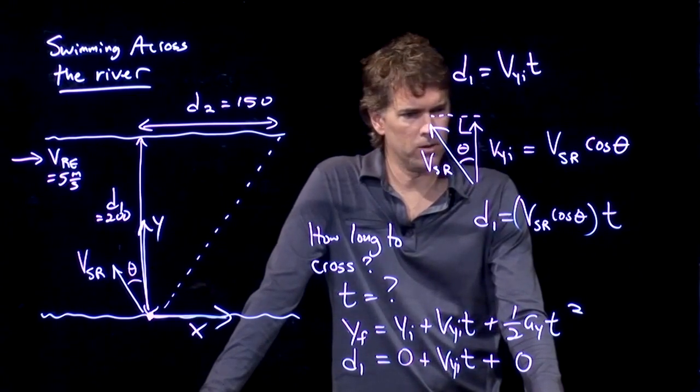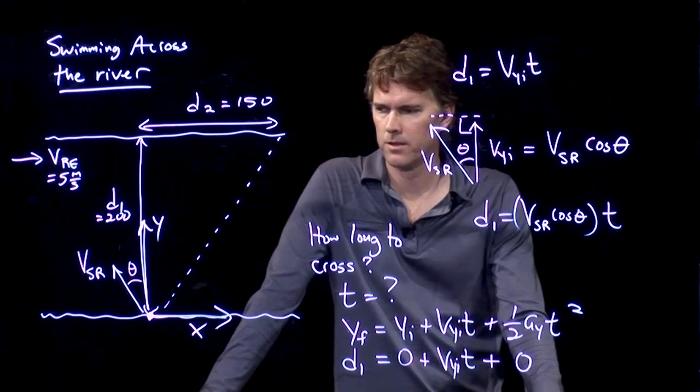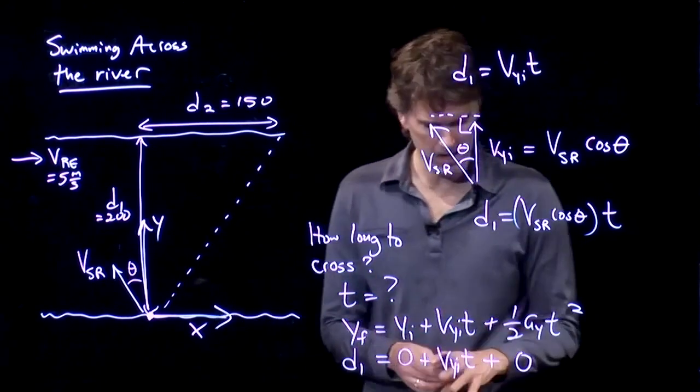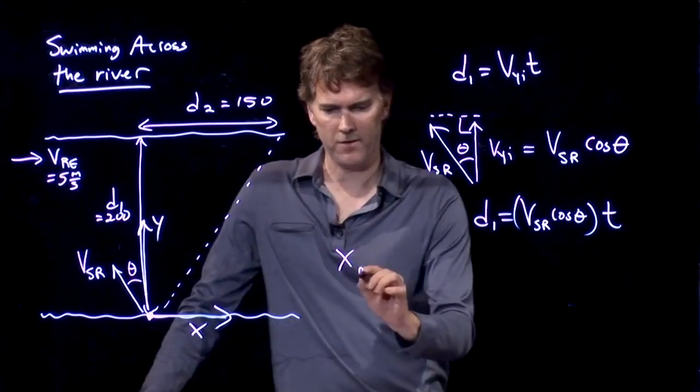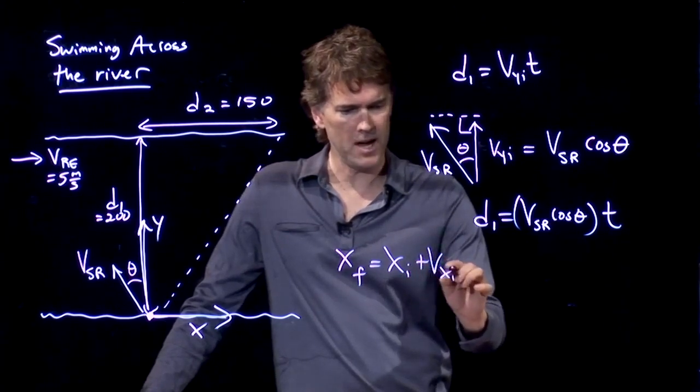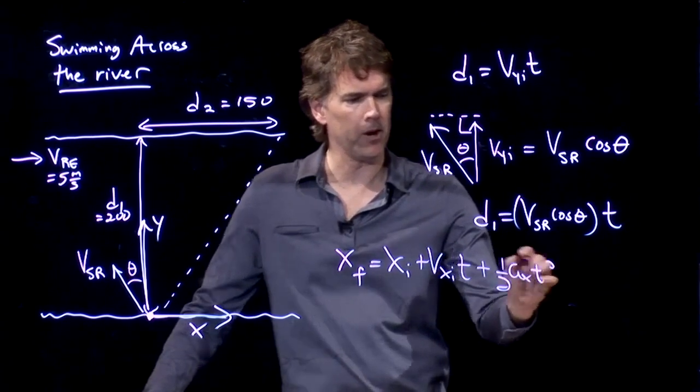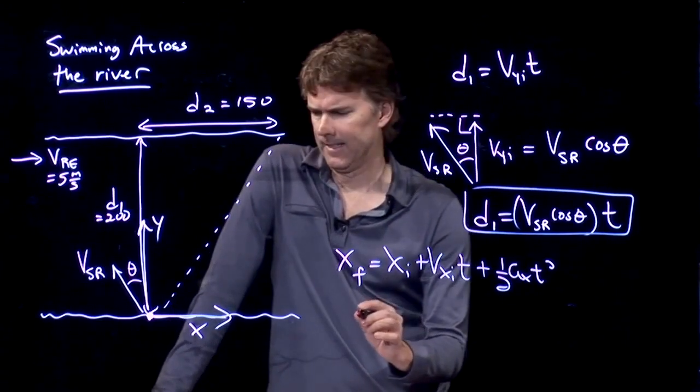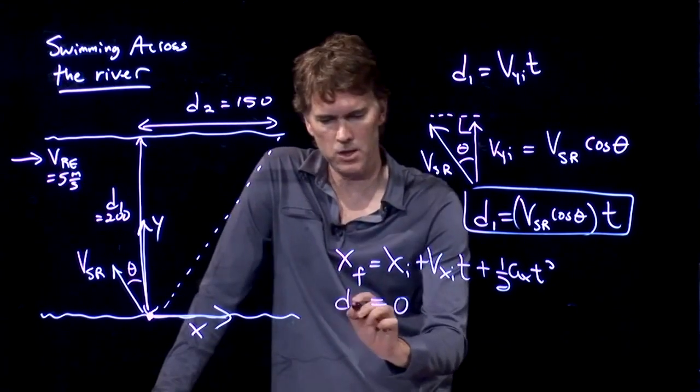But we're not quite there yet. It seems like we're going to have to worry about the x equations. So let's try this again, but use the x variables. x final equals x initial plus v x initial times t plus 1 half a sub x t squared. Alright. x initial is zero. x final is going to be d2.